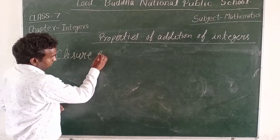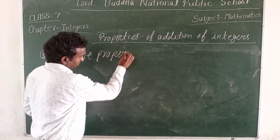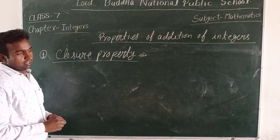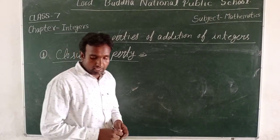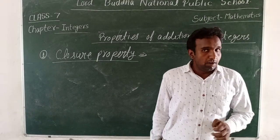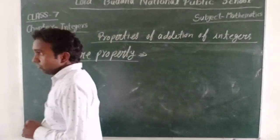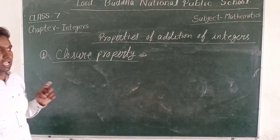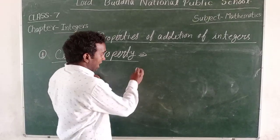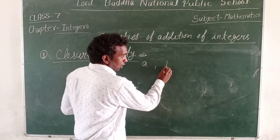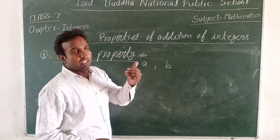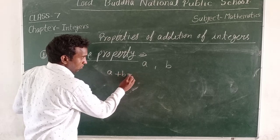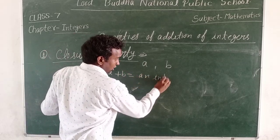Closure property: if we take the sum of two integers A and B, the result is always an integer. That means A plus B equals an integer.